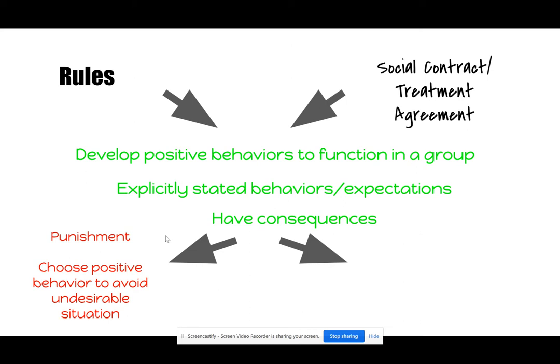A punishment is something undesirable — it may be losing something or having something taken away, like a privilege. Obviously, we're not hitting our students. Because we want to avoid punishment happening, or avoid it happening again, we will theoretically choose to engage in positive behaviors to avoid that undesirable situation. And then we develop the habits of positive behaviors to help us get along in a group.